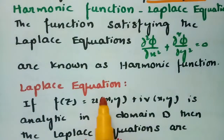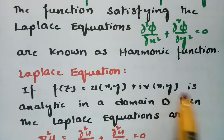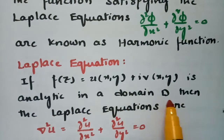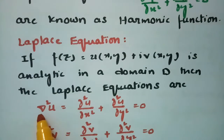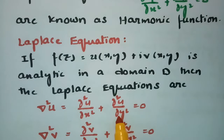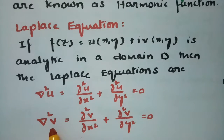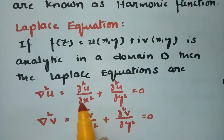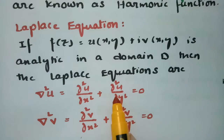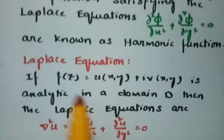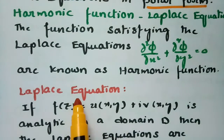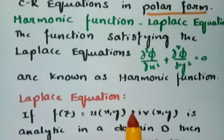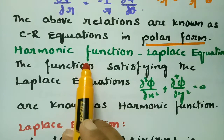If f(z) = u + iv is analytic in a domain D, then the Laplace equations are: ∇²u = ∂²u/∂x² + ∂²u/∂y² = 0, and ∇²v = ∂²v/∂x² + ∂²v/∂y² = 0. The double derivative with respect to x plus the double derivative with respect to y equals 0. If the function satisfies these Laplace equations, we say the function is a harmonic function.